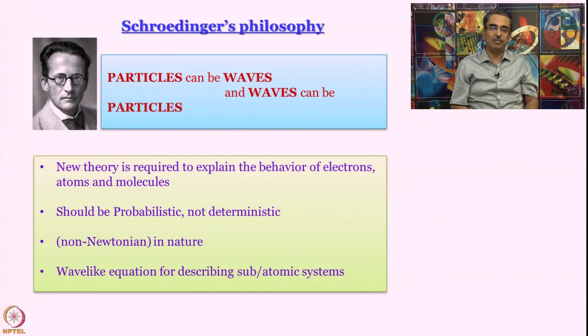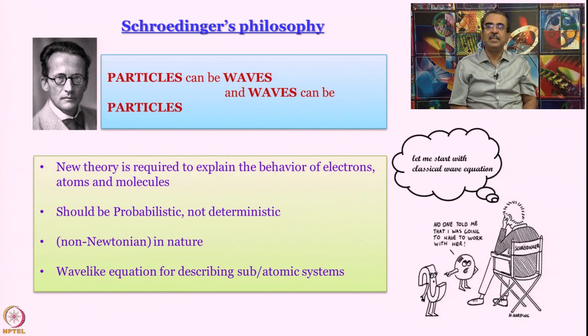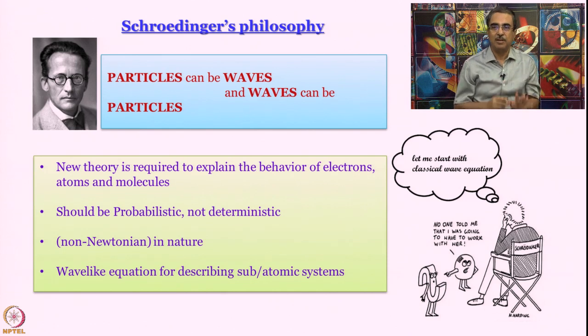And one thing that was understood at that time is that you need some kind of a new theory. And this theory has to be probabilistic and non-deterministic. Since you cannot really talk about a precise value of position and momentum, you can only talk about things like average value, most probable value. So some kind of statistics would be required. And it would be a deviation from Newtonian mechanics. And since there is wave nature of matter, what Schrodinger thought was, well, for any kind of wave, wave that you see in the sea or wave that is produced on the surface of tabla when we play it, for all waves, there is something called a classical wave equation.